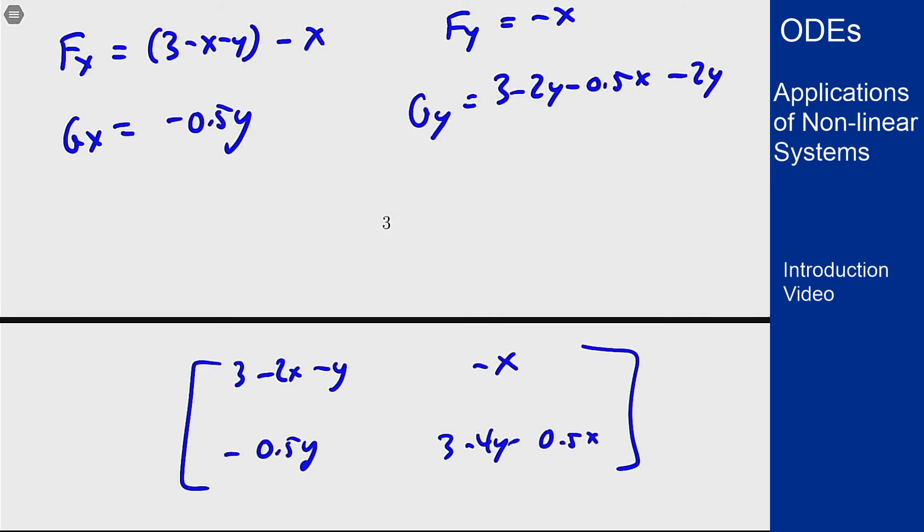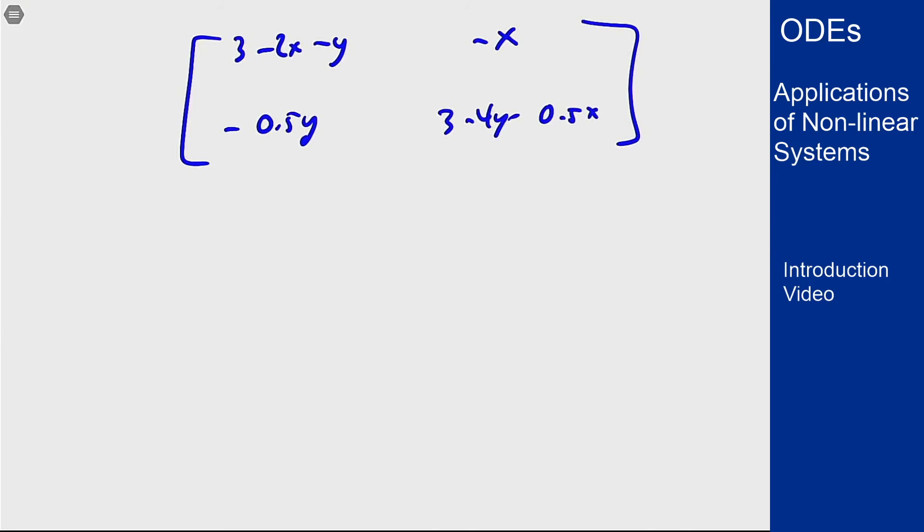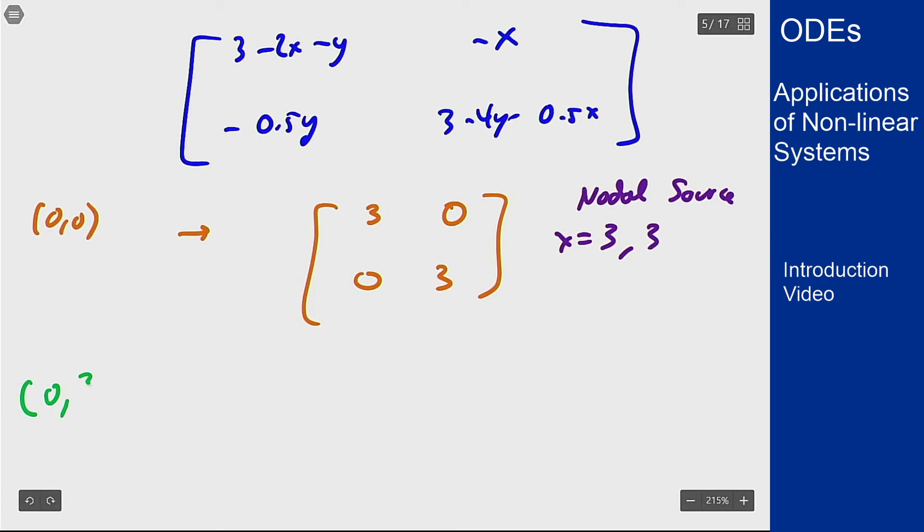So now we can see what's going to happen here. At the point (0,0), this matrix becomes [3, 0; 0, 3]. That is a nodal source with eigenvalues 3 and 3. At the point (0, 3/2), I'm going to get 3 minus 3/2 there, which is 3/2, 0 for x, -3/4, and 3 minus 6 is -3. Eigenvalues here are going to be 3/2 and -3. This is a saddle.